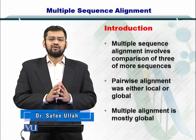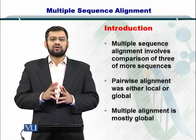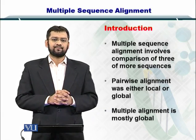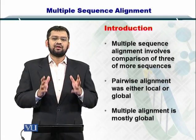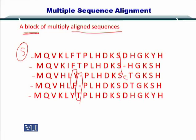In pairwise sequence alignment, we had global as well as local sequence alignment, besides the repeated matches or the overlapping and trailing portions. In MSA or multiple sequence alignment, we have mostly global sequence alignment only. Here we have several sequences — five of them — that have been aligned and we call them a block. They have been aligned such that there are some mismatches or substitutions, and some gaps as well, but the five sequences are aligned very nicely. This is what can be achieved by employing multiple sequence alignment strategies.